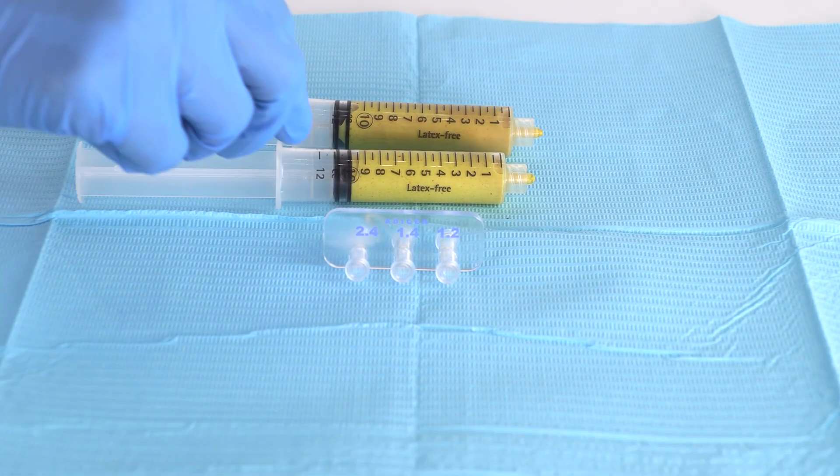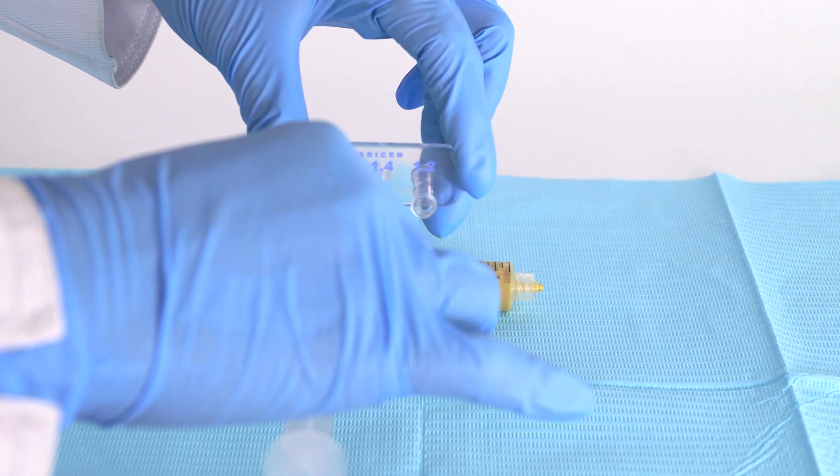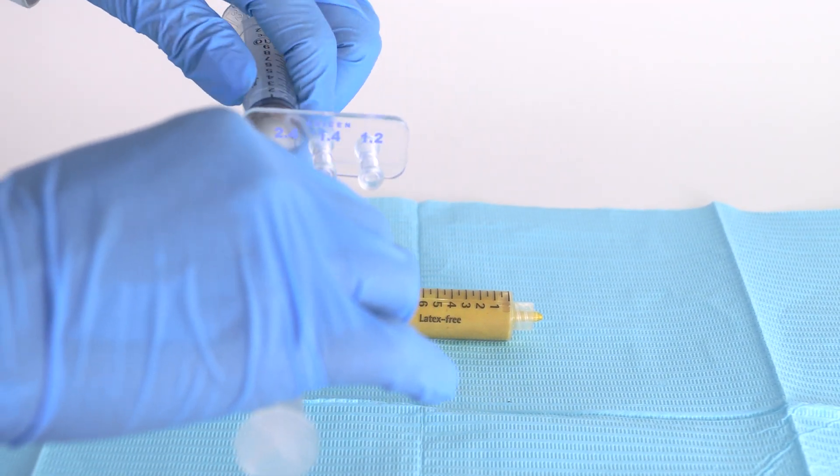If necessary, use the Addison three-phase emulsifier to create a micronized cellular matrix of 1.2 millimeters.